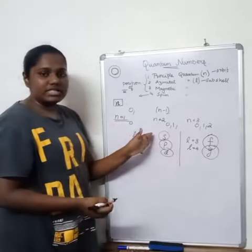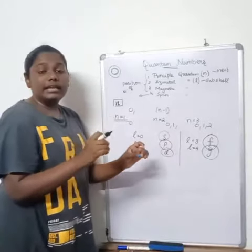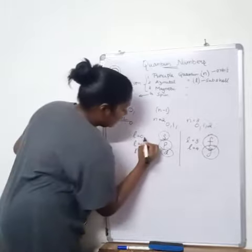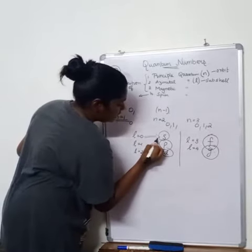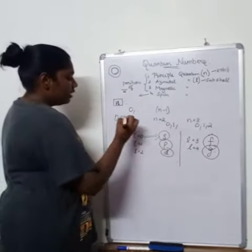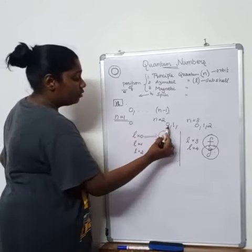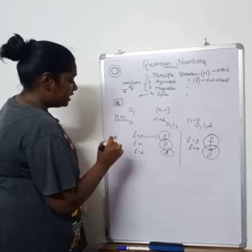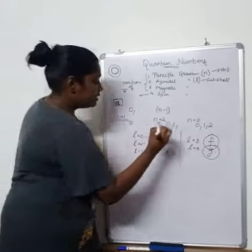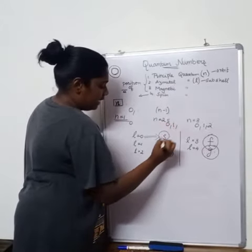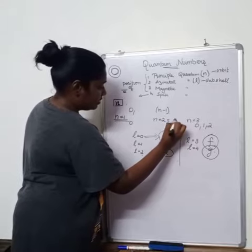A subshell. So, n is equal to 0, don't consider it as a number. This is actually something which denotes this particular subshell. So if n is equal to 2, there are two values, 0 and 1. This means that there are two subshells, S subshell and P subshell.